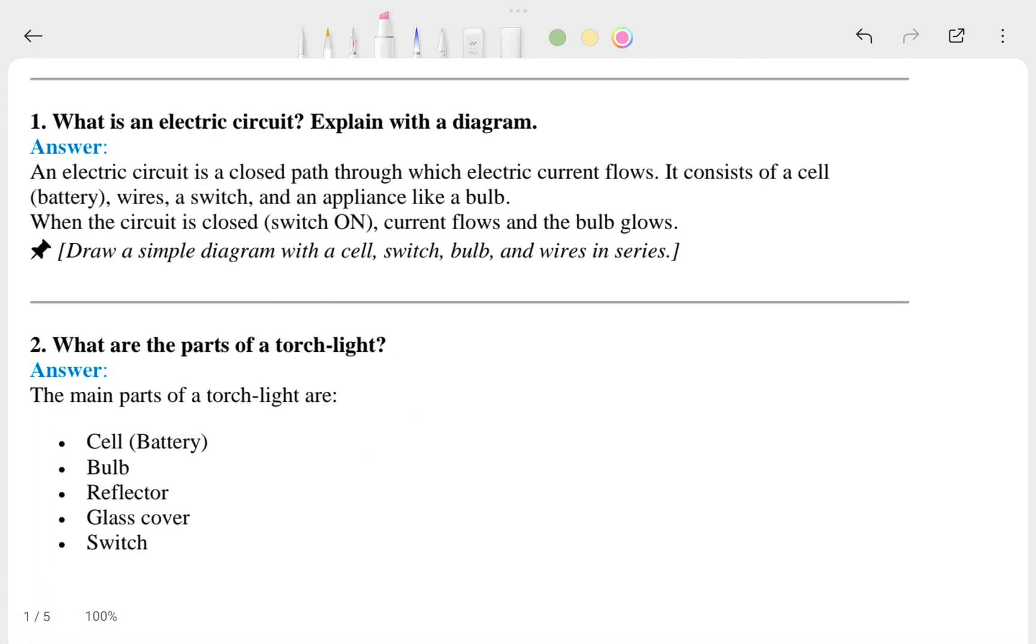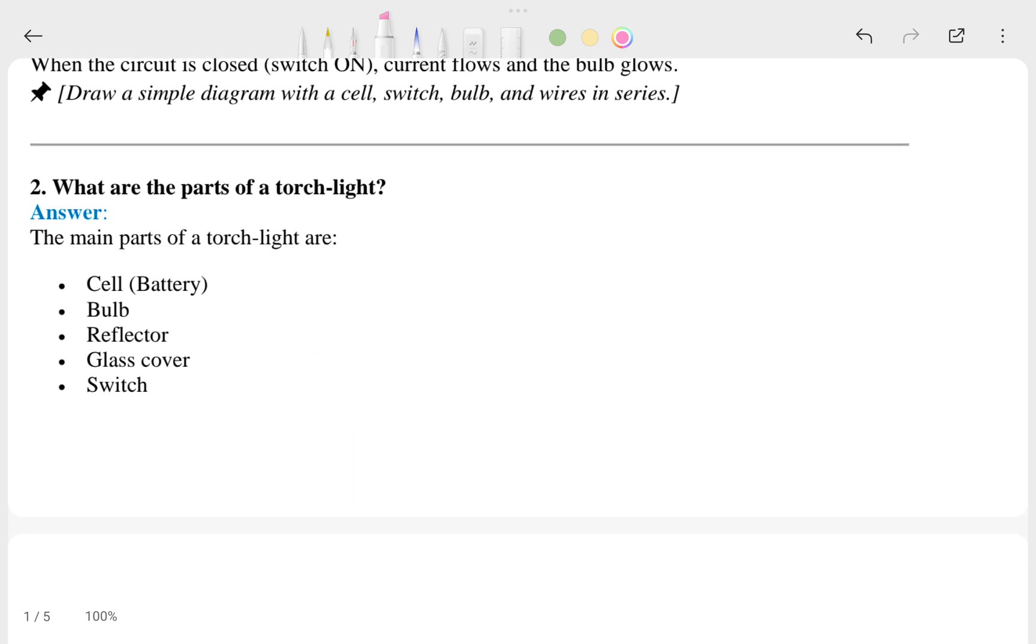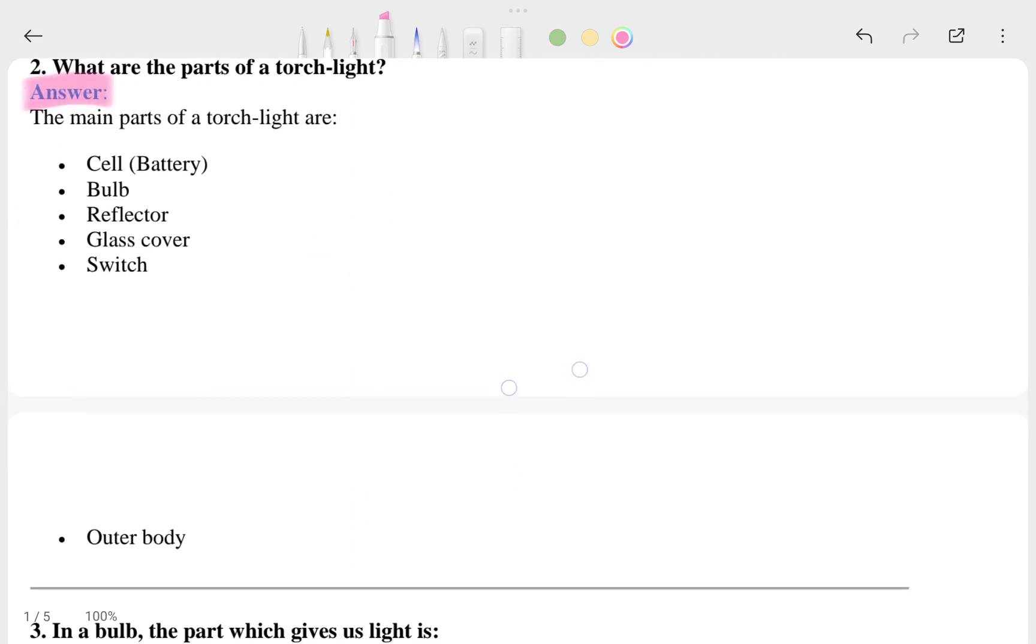Let's talk about this one: What is an electric circuit? Explain with a diagram. And this is the answer. Second question is what are the parts of the torch light, and here is the answer. Is it clear?